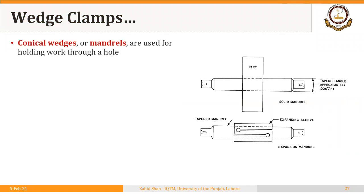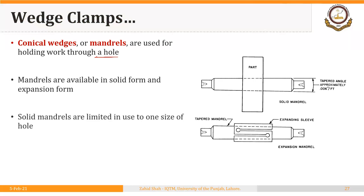Then we have conical wedges or mandrels. They are used for holding the work through an already made hole. We discussed mandrels when we discussed work holding on a lathe. Mandrels are available in solid form and expansion form. Solid mandrels are limited in use to one size of hole.